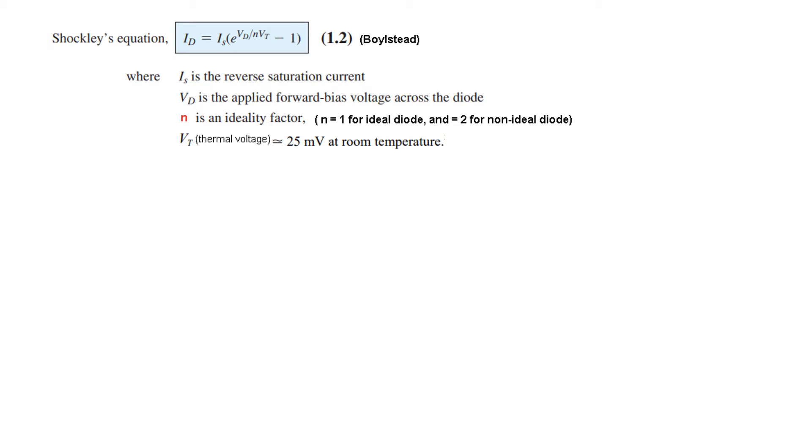Here you can see that Is is the reverse saturation current. Vd is the applied voltage, diode voltage. N is the ideality factor, which is 1 for ideal diode and 2 for non-ideal diode. In this video we will be assuming N to be 1. Vt is the thermal voltage which is equal to 25 millivolt at room temperature.